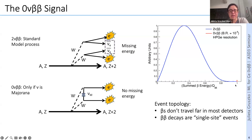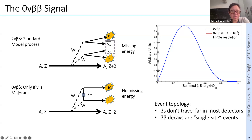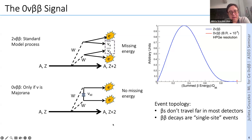The width of that signal peak is determined by the energy resolution of the experiment — here I've drawn germanium detector energy resolution. The ratio between the two-neutrino background and the signal is already one order of magnitude worse than the limits we've been able to set to date, so we really are looking for a very tiny signal. We also use event topology: in germanium, the two electrons from double-beta decay travel only millimeters, making them single-site events, while gamma backgrounds tend to scatter over centimeters — multi-site events.